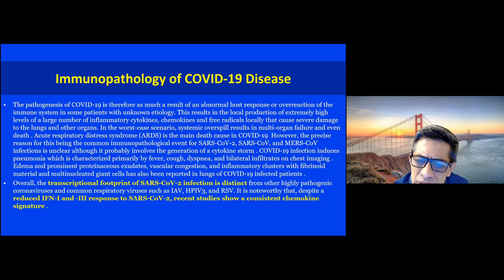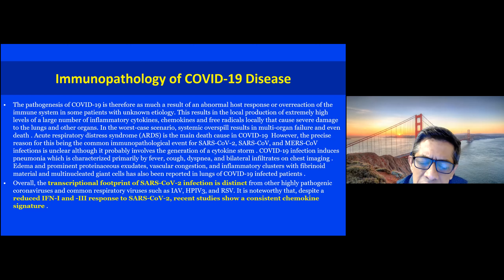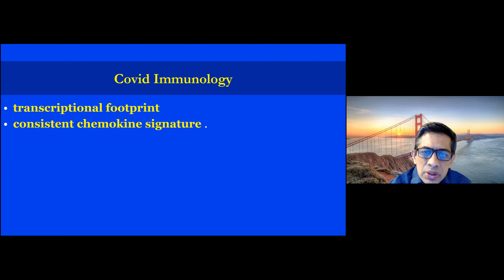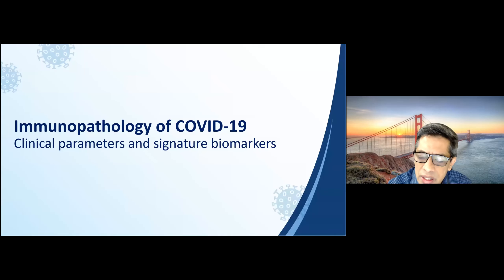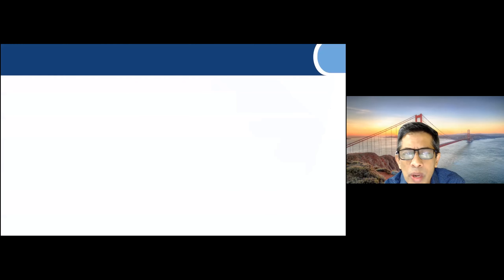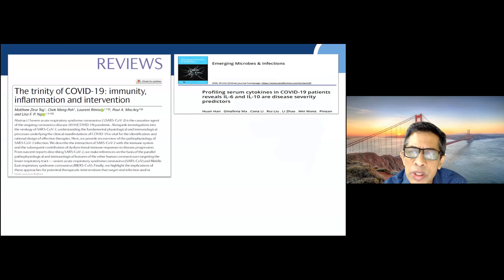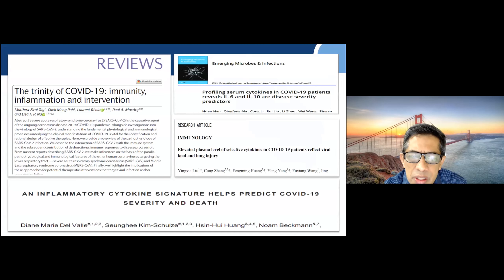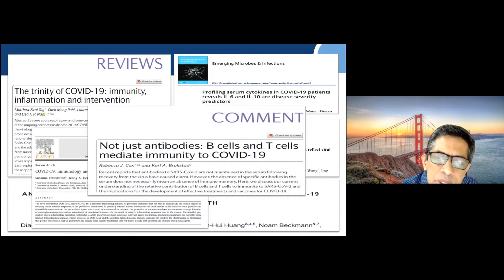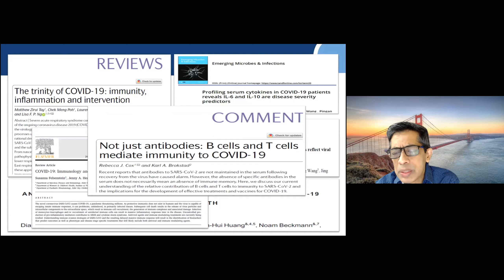It is noteworthy that despite the blunted interferon type 1 and type 3 response to SARS-CoV-2, recent studies have shown a consistent chemokine signature. So COVID immunology has two things: a transcriptional footprint and a consistent chemokine signature. From a clinical standpoint, we know there is a trinity of immunity, inflammation, and intervention. The inflammatory immunological cytokine signature helps predict severe COVID and death, and it is not just about antibodies — both B cells and T cells mediate immunity in COVID.